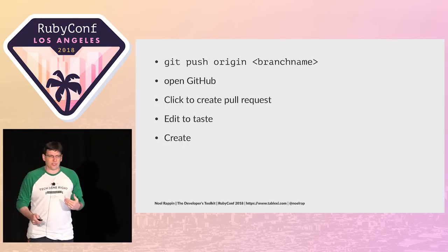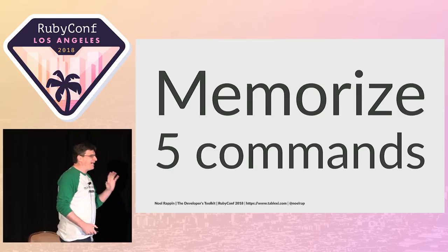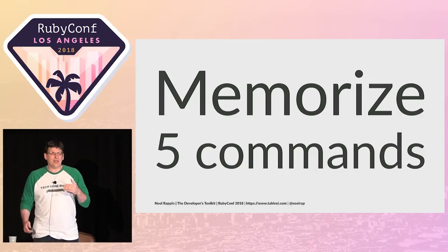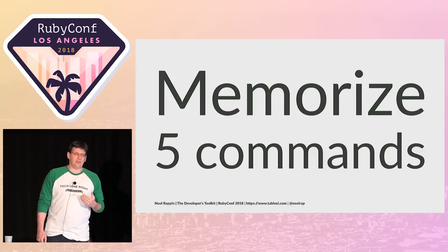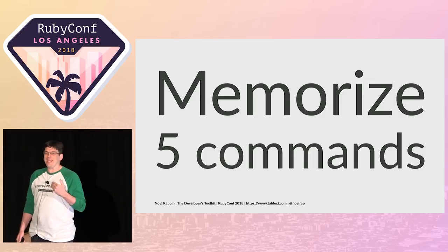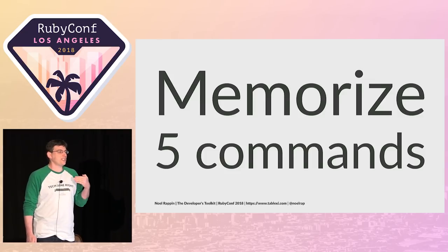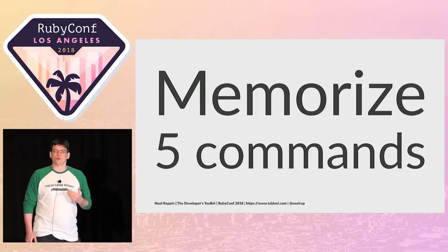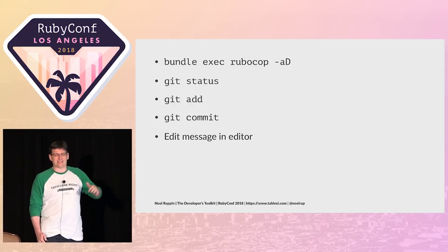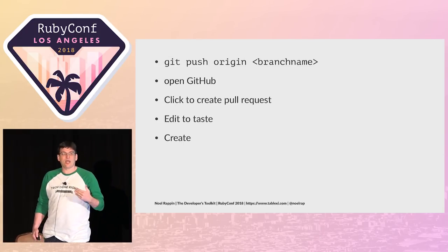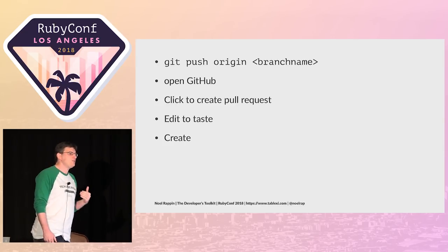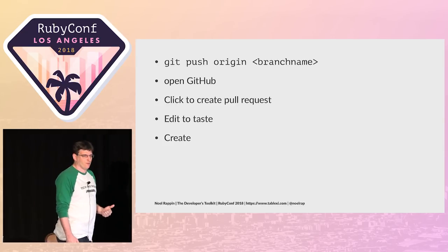This is a lot of complexity. In order to do this, I have to have at top of mind five different commands — four Git commands plus my RuboCop. And maybe more to the point, what's the most important piece of this workflow? To me, the most important piece is making sure that the changes I think are going into the repository are actually going into the repository. That important step is buried — it's technically the Git add step. And if you start cutting corners, if you get frustrated doing the same ten steps over and over again, it becomes easy to jump over the most important part of the process.